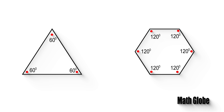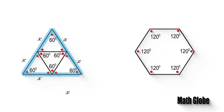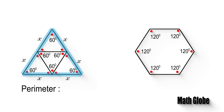Next, we divide the larger triangle into four congruent equilateral triangles. Then let x be the length of the smaller triangles' sides. From this, the perimeter of the larger equilateral triangle will be 6x.